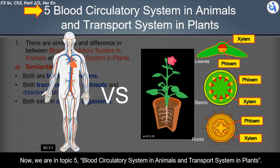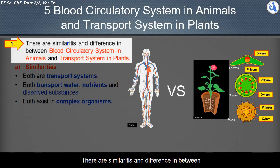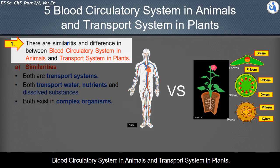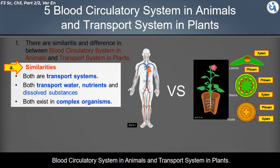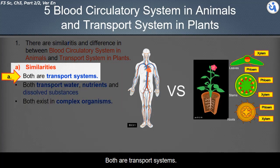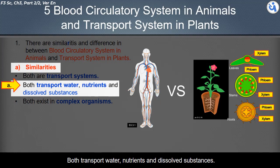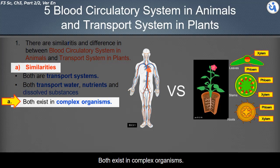We are now in topic 5: blood circulatory system in animals and transport system in plants — their similarities and differences. Both systems are transport systems. Both transport water, nutrients, and dissolved substances. Both exist in complex organisms.